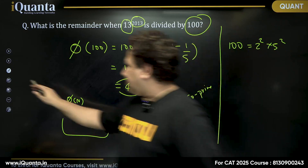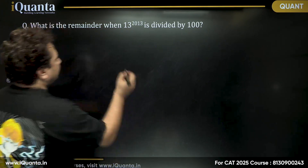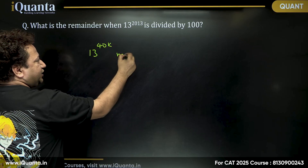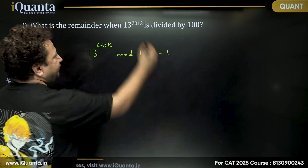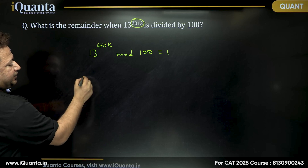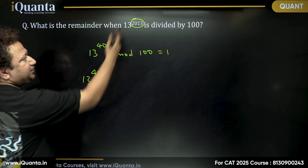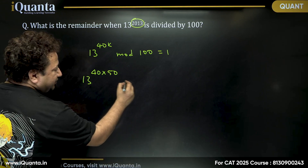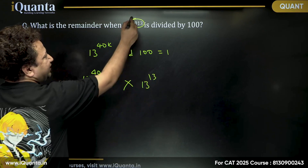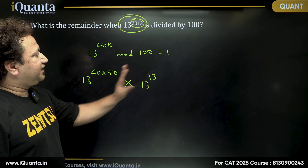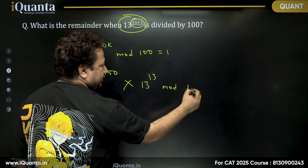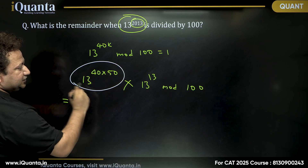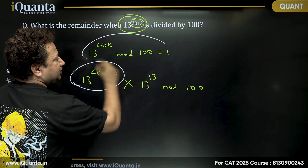Since 13^40k mod 100 = 1, and we have 13^2013, let me break down the exponent 2013. Since 40 × 50 = 2000, I can write 13^2013 as 13^2000 × 13^13, which equals (13^40)^50 × 13^13 mod 100. The first term gives remainder 1, so we are left with 13^13 mod 100.